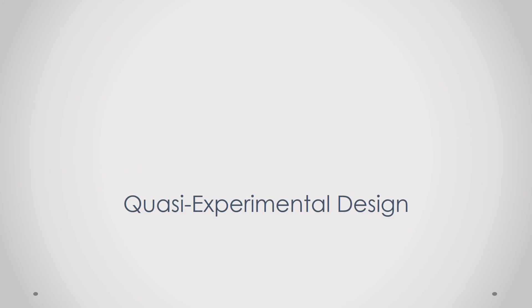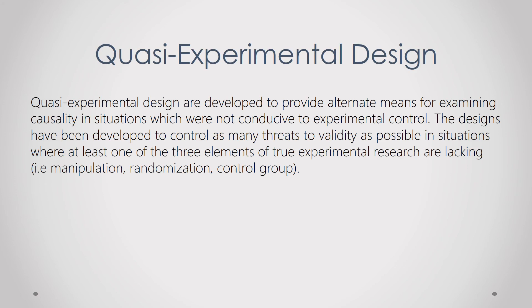Next is the quasi-experimental design. Quasi-experimental designs are developed to provide alternate means for examining causality in situations that are not conducive to experimental control. These designs control as many threats to validity as possible in situations where at least one of the three elements of true experimental research — manipulation, randomization, or a control group — is lacking.